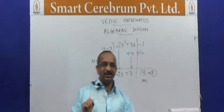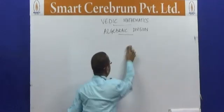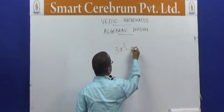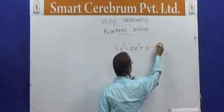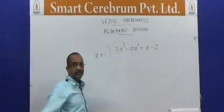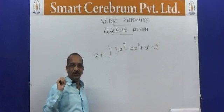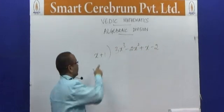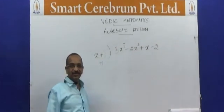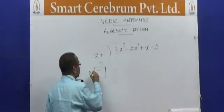Let us take one more example of a different kind altogether. Let us say I have 3x³ minus 2x² plus x minus 2 and my divisor is x plus 1. Now I have to find the modified divisor. The deviation is plus 1, and I change the sign, so this becomes minus 1. Minus 1 is my modified divisor.